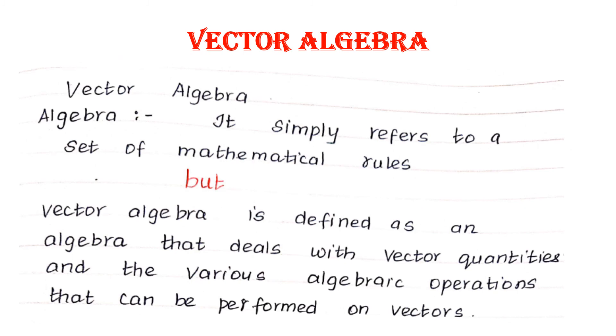And next, vector algebra. Already we have seen vector analysis. And in here, we are going to see the vector algebra. What is normal mathematical algebra? In the normal algebra, it simply refers to a set of mathematical rules. But what is vector algebra is defined as the algebra that deals with vector quantities and the various algebraic operations that can be performed on vector. That is very important. Various algebraic operation and it is dealed with the vector quantities only.